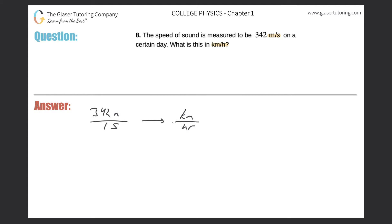I like to think about this in a three-step process. First, convert the numerator value of meters into kilometers — that'll be step one. Second, take the denominator value of seconds and convert that into hours separately. Last but not least, take the kilometers and divide by the value of hours for step three, and that will give the answer.